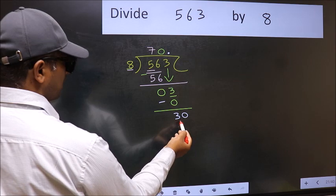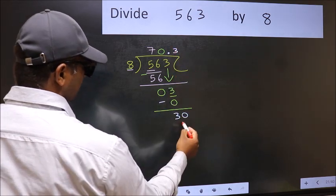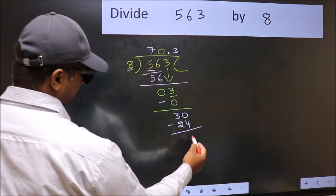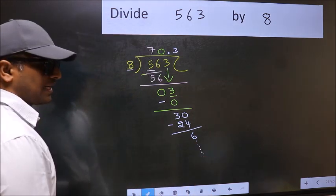So, 30. A number close to 30 in the 8 table is 8 times 3, which is 24. Now you should subtract. We get 6, and continue the division. I am not doing that.